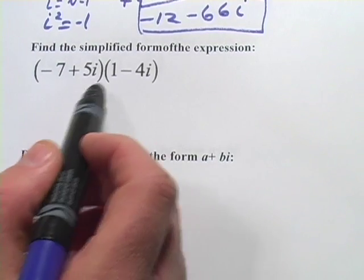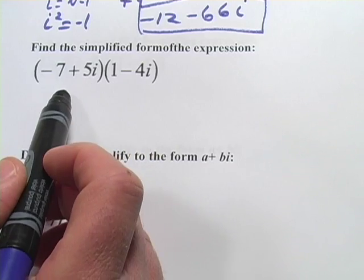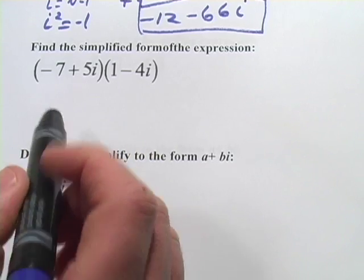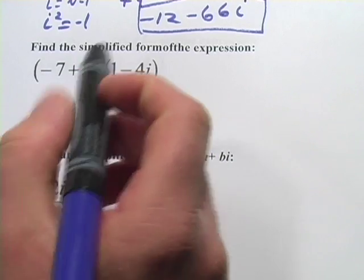Let's look at another multiplication problem. In this case, it looks a lot like binomial multiplication, which you would normally FOIL. And that's exactly what you're going to do here. Let's multiply the first terms, outside terms, inside terms, and last terms.